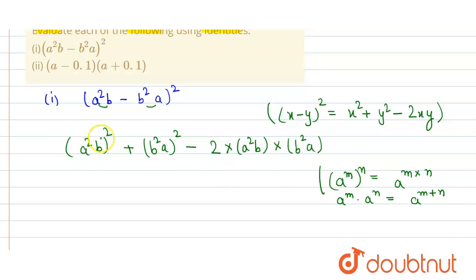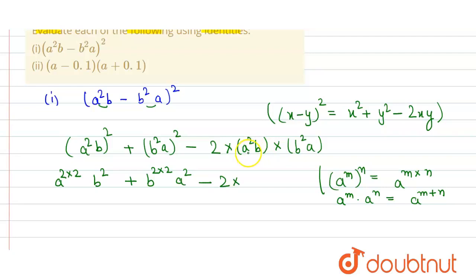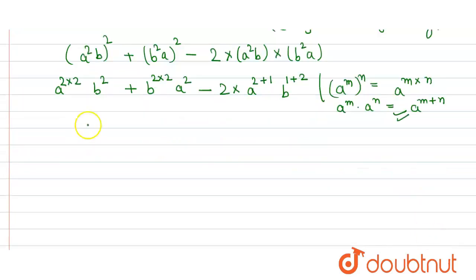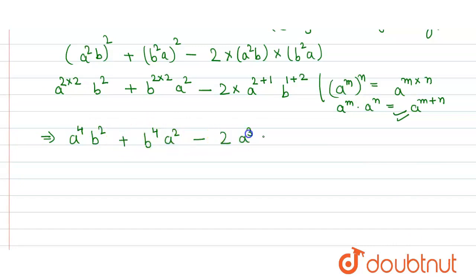The powers get multiplied and added accordingly. We get a raised to power 2×2 = a⁴, and b², similarly b raised to power 2×2 = b⁴, and a². For the last term, the powers of a add to give a^(2+1) = a³, and b^(1+2) = b³. So the answer for the first part is a⁴b² + b⁴a² - 2a³b³.